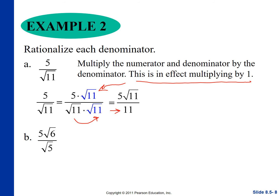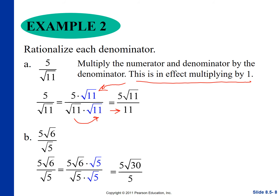For part b, we need to get √5 out of the denominator. We multiply by √5/√5, which is effectively multiplying by one. So 5 times √6 times √5 becomes 5√30 in the numerator, and √5 times √5 gives 5 in the denominator. We can simplify: the 5 over 5 cancels, and we end up with just √30.